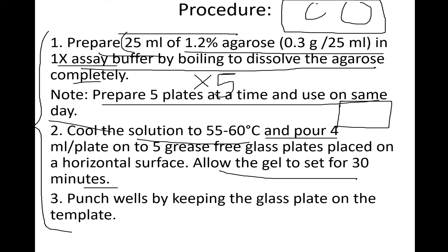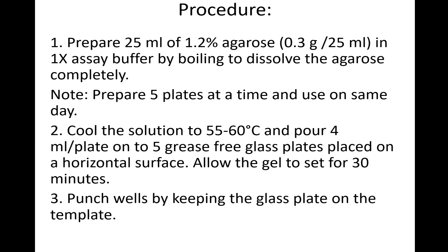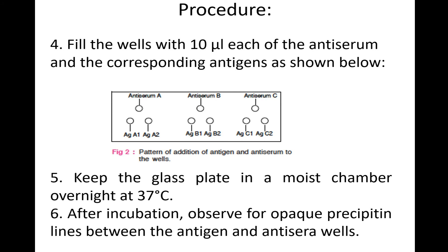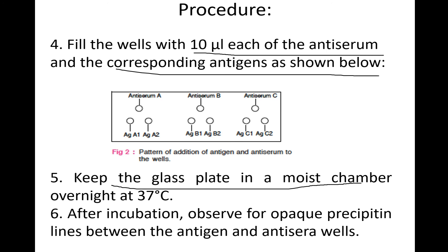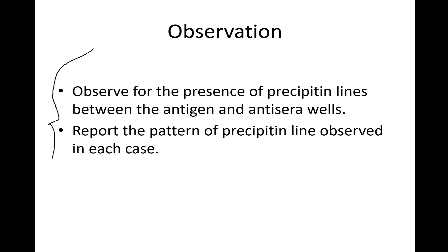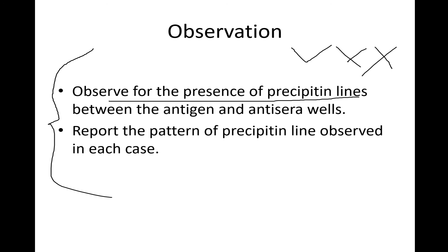Using a gel puncher and keeping the glass plate on the template, punch three holes in each glass plate — two wells for antigens and one for antiserum. Fill each well with 10 microliters of antiserum and the corresponding antigens. Keep the glass plate in a moist chamber overnight at 37 degrees. After incubation, observe for opaque precipitating lines between the antigen and antiserum wells, and interpret the results based on the pattern of precipitating lines observed.